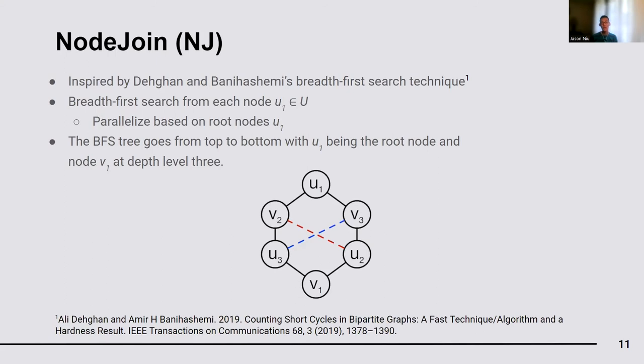Inspired by prior work on counting cycles using breadth-first search, NodeJoin counts induced six-cycles by performing a limited breadth-first search from each node in U, up until a depth level of three. If we look at the figure below, we can see that starting from a root node U1, NodeJoin iterates through two of node U1's neighbors, V2 and V3. Then, it finds nodes U3 and U2 such that they are connected to either V2 or V3, but not both. These dotted edges represent edges which cannot exist for the cycle to be induced. Finally, we complete this cycle by entering it through nodes V1, which are connected to both U2 and U3. We can parallelize this algorithm based on the root or starting node U1.